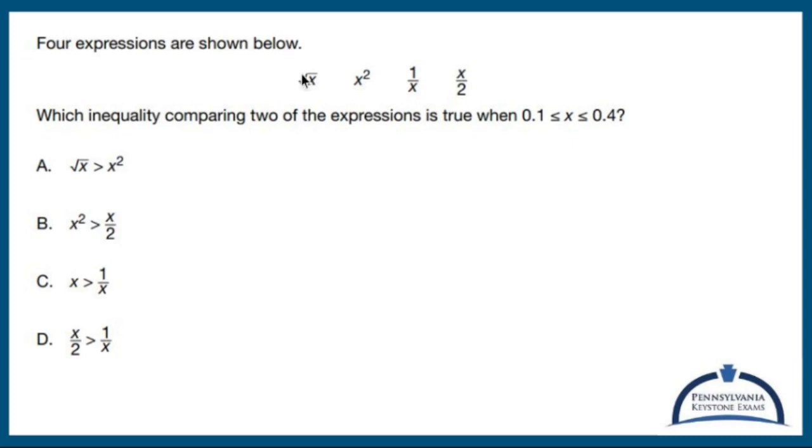Four expressions are shown below: square root of x, x squared, 1 over x, x over 2. Which inequality comparing two of the expressions is true when 0.1 is less than or equal to x, which is less than or equal to 0.4?